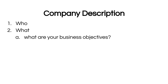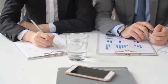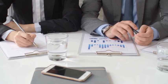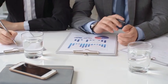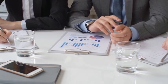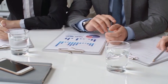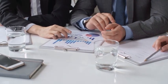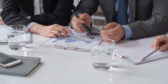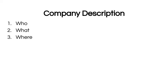The next question is: what are your business objectives? Set realistic short-term and long-term objectives. For example, if you plan to earn a quarter million dollars from your coffee shop in the first year, include an action strategy that you will undertake to meet your financial goals.